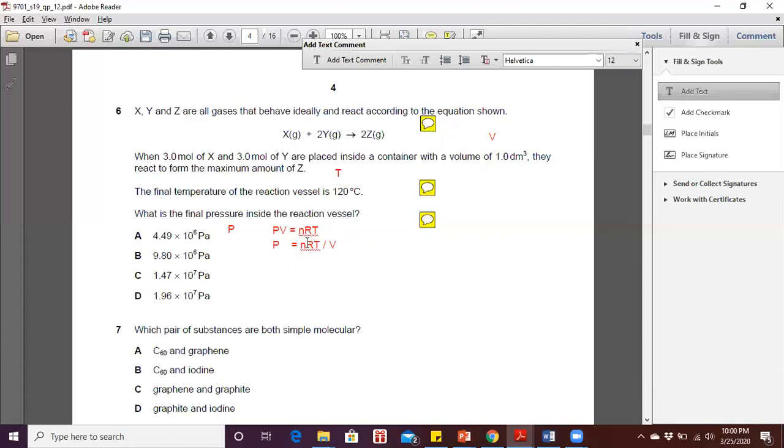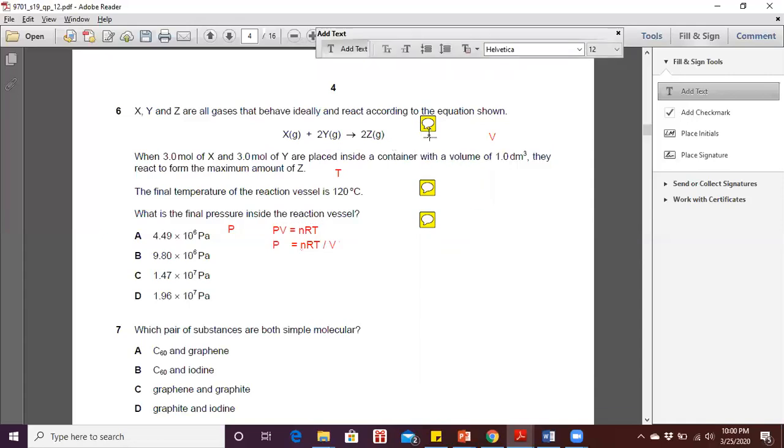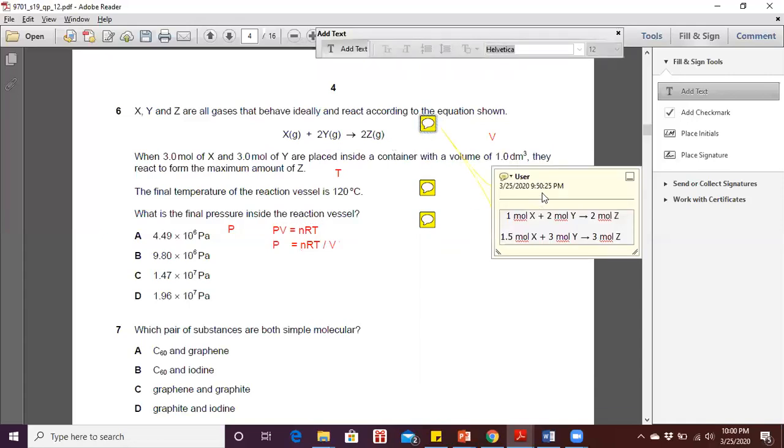Next, we are going to find the number of mole because it's not given as stated in the question. So in order to find the number of mole here, we are going to look at the mole ratios for the products and also the reactants. So first of all, now from here, we look, we are able to see that one mole of X would react with two moles of Y and thus produce two moles of Z.